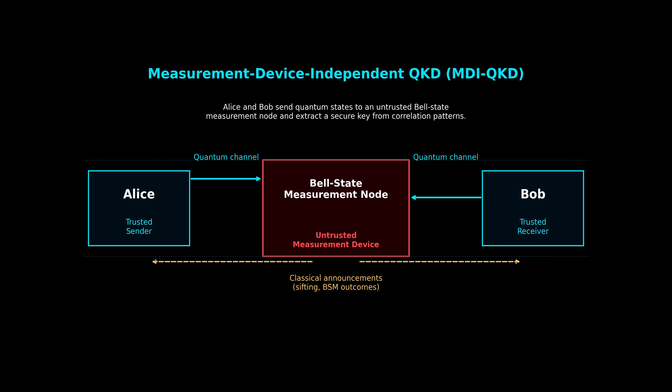In this diagram, we're looking at the fundamental layout of measurement device independent QKD. The key idea is that Alice and Bob no longer send quantum states to each other directly. Instead, they both send their signals into a central measurement node — the Bell State Measurement Node in the middle. This central node performs a Bell State measurement, but the important point is that this device is considered completely untrusted. It can be owned by Eve, modified by the manufacturer, tampered with, or operating incorrectly — and none of that breaks the security of the protocol.